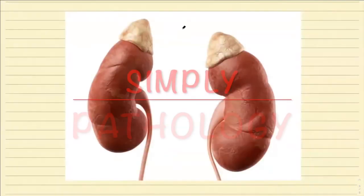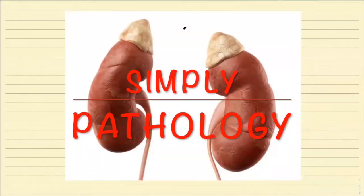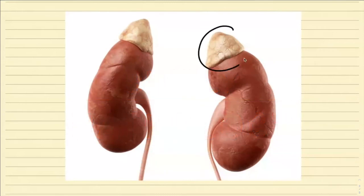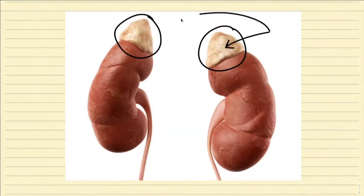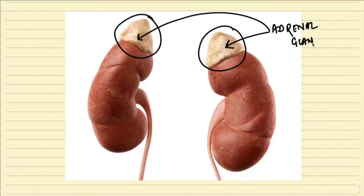Today we are going to start with the adrenals. As you know, the adrenal glands are a pair of suprarenal organs present just on top of the kidneys. We have a pair of adrenal glands, and the normal adrenal gland weighs approximately four to five grams.